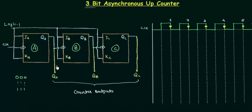For toggling we need JA, JB, JC equal to 1 as well as KA, KB, KC equal to 1. I have given a common logic-1 input to all the inputs of the flip-flops, so we definitely have toggling. Also, you can see this symbol — it shows negative edge triggering. The bubble means negative and the arrow means edge, so in total it gives us negative edge triggering.